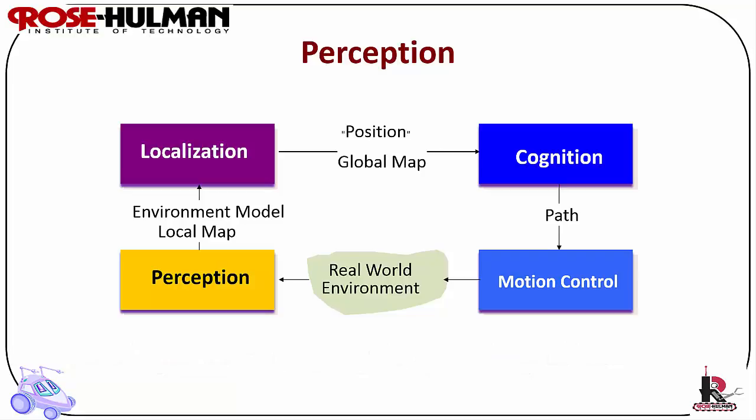Sensing allows a robot to know its state, or description of itself, at any point in time. A robot's state may be visible, partially hidden, or hidden, and a state may be discrete or continuous.